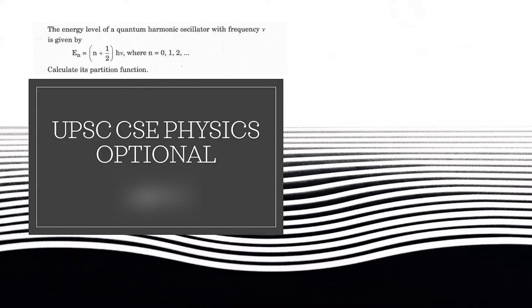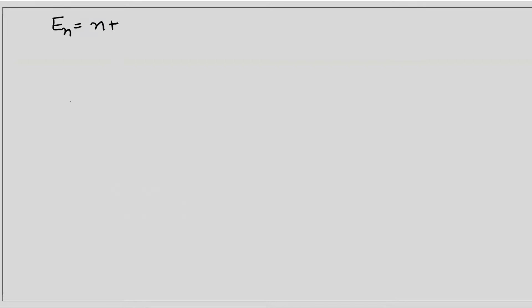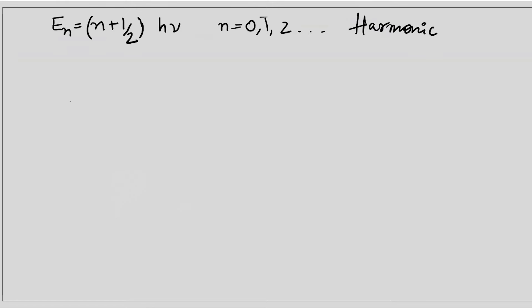Let's start with the solution. We are given E_n equal to n plus half times h-nu, where n can take values 0, 1, 2, ... These are the energy levels for a quantum harmonic oscillator.